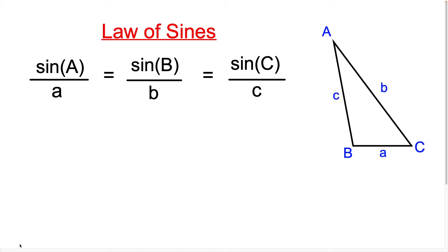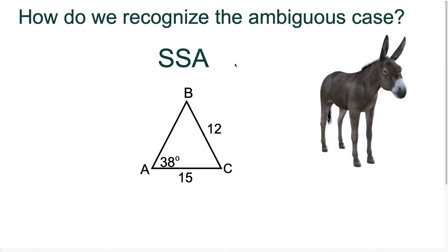What's up, I'm Vin and today I want to teach you the Law of Sines ambiguous case. Here's the formula we're going to need. So how do we know when we're dealing with the ambiguous case? It's when we're given a triangle and we're told two sides and one of the angles that's not between the two sides. This is sometimes abbreviated as side-side-angle, but now let's jump into a question.